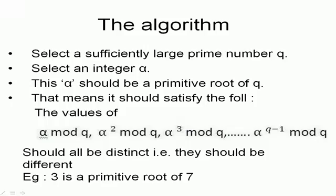Alpha should be a primitive root of Q. That means it should satisfy the following: the values of alpha mod Q, alpha square mod Q, alpha cube mod Q, up to alpha raised to Q minus 1 mod Q should all be distinct, that is they should have different values. For example, 3 is a primitive root of 7.